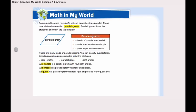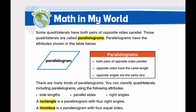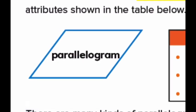Now let's take a look at this figure. Some quadrilaterals have both pairs of opposite sides parallel. Those quadrilaterals are called parallelograms. Let's take a look at this parallelogram. Both opposite sides are equal — we have two pairs, two parallel pairs. When we have all opposite sides parallel, we call it a parallelogram.